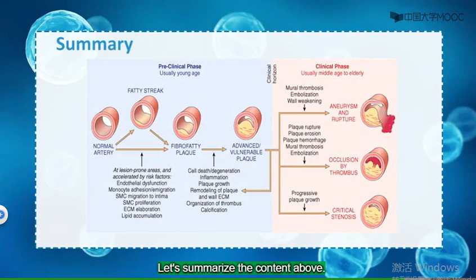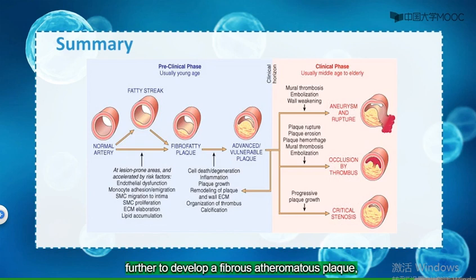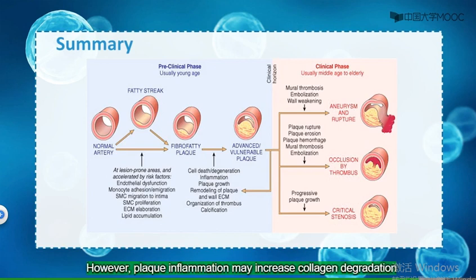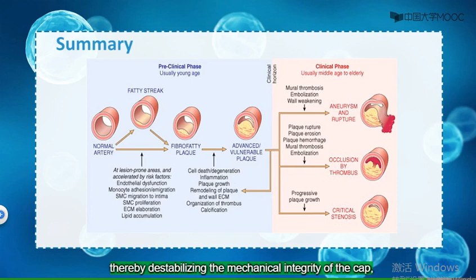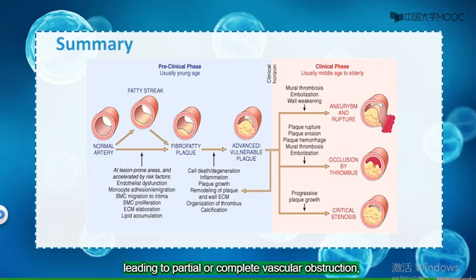Let's summarize the content above. At lesion-prone areas, ATH is initiated by risk factors including endothelial dysfunction. Further development produces a fibroatheromatous plaque composed of a necrotic core and fibrous cap, which is a stable plaque. However, plaque inflammation may increase collagen degradation and reduce collagen synthesis, thereby destabilizing the mechanical integrity of the plaque, which promotes vulnerable plaque formation. Along with progression, plaque erosion or rupture typically triggers thrombosis, leading to partial or complete vascular obstruction, tissue infarction, and even aneurysm.